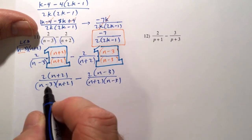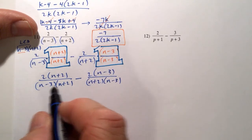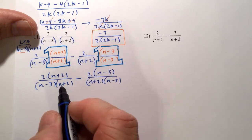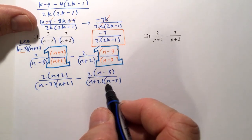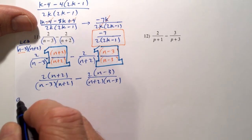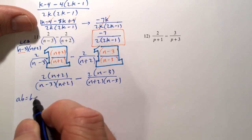So whether you have the factors in this order here, n minus 3 times n plus 2, or in this order, they are the same. Remember, a times b equals b times a.